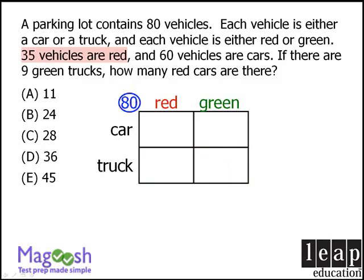The question tells us that we have 35 red vehicles. Now some of those red vehicles are cars, and some of those red vehicles are trucks. At the moment, we don't have enough information to place any of the 35 red vehicles in either of these two boxes. However, since 35 of the vehicles are red, we know that the sum of these two boxes must be 35, so we'll add that here.